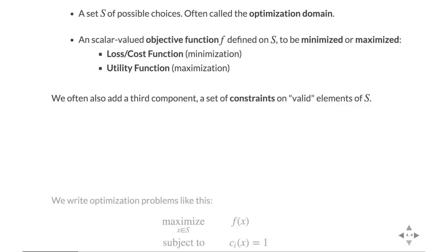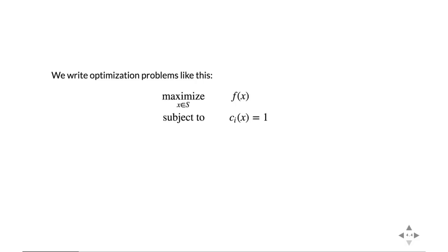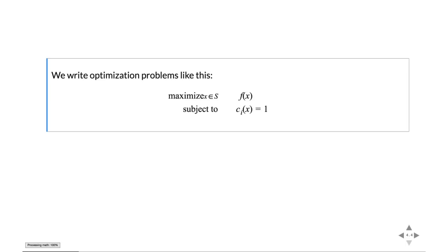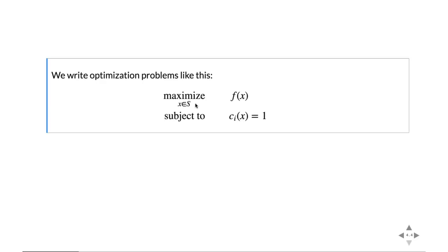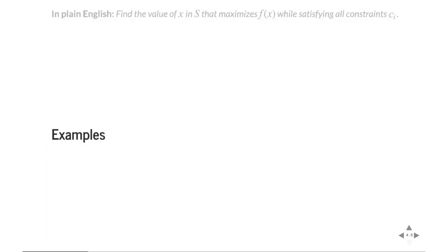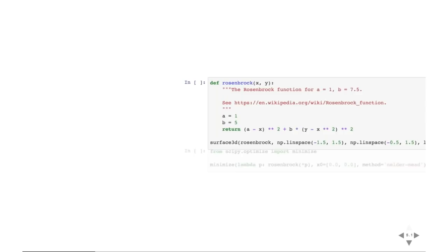Mathematically, we write: maximize over x drawn from set X the function f(x), subject to constraints c_i(x), where c_i returns zero if the constraint is not satisfied and one if it is. In plain English: find the value of x in S that maximizes f while satisfying all constraints. As an example, we'll look at the Rosenbrock function — a classic example of a function that's hard to optimize — rendered in 3D using ipy_volume.